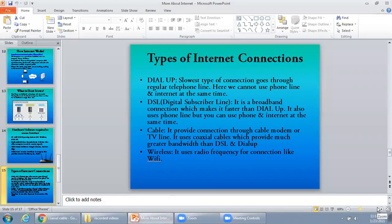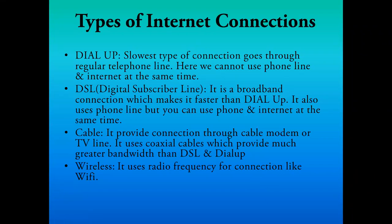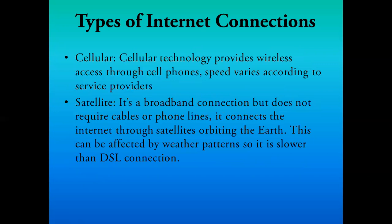Cable connection provides greater bandwidth than DSL and dial-up. Next is wireless connection, which uses radio frequency signals — like Wi-Fi. These types of wireless internet connections are seen at railway stations, metro stations, and airports, connecting you to the internet through radio signals only.